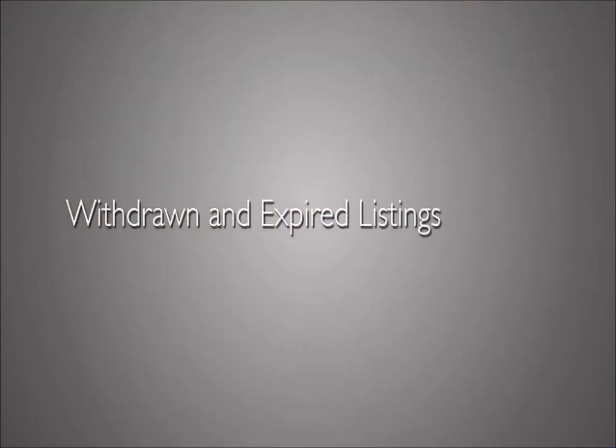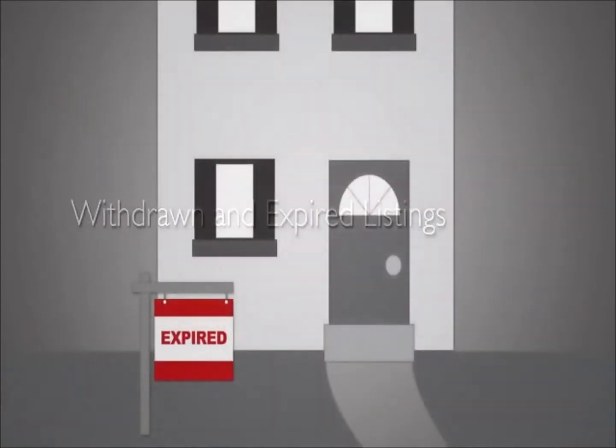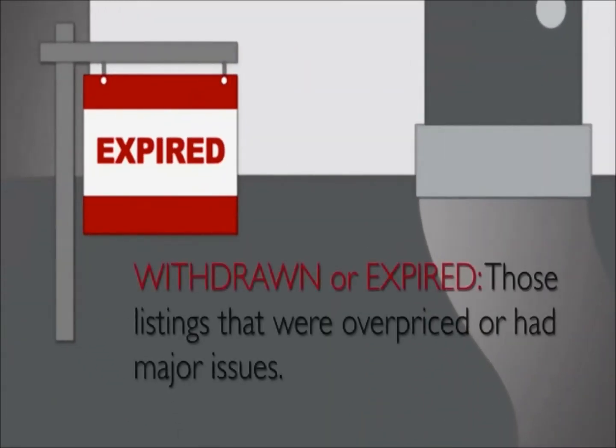Withdrawn and expired listings are much like active listings — these homes haven't sold either after being on the market for some time, and in some cases even going through several price reductions. Usually, these homes were overpriced or had major issues that deterred buyers. By analyzing the records of withdrawn and expired listings, your agent can determine where those pricing strategies went wrong, and that information can help you see the power of getting the price right at the outset.